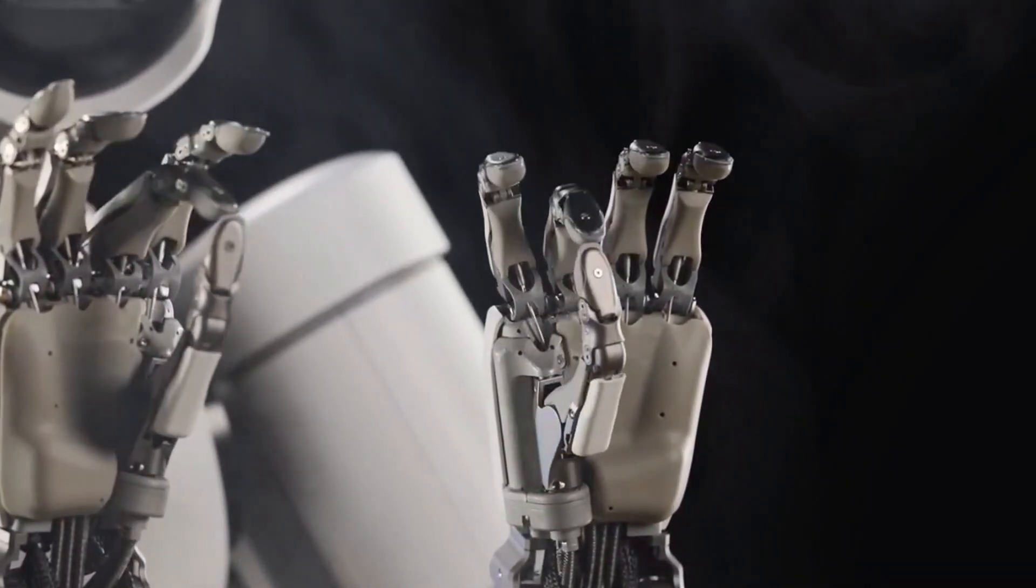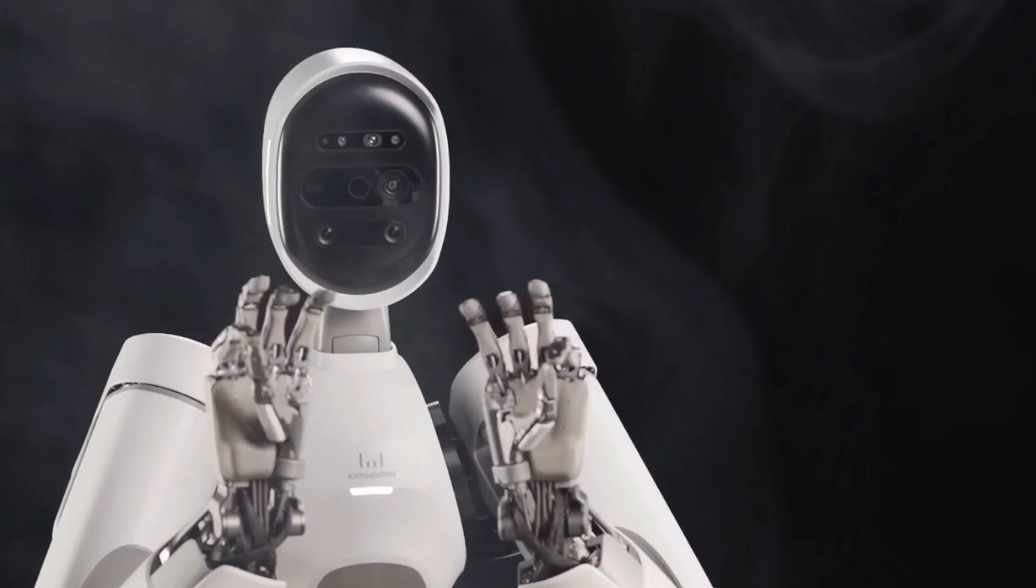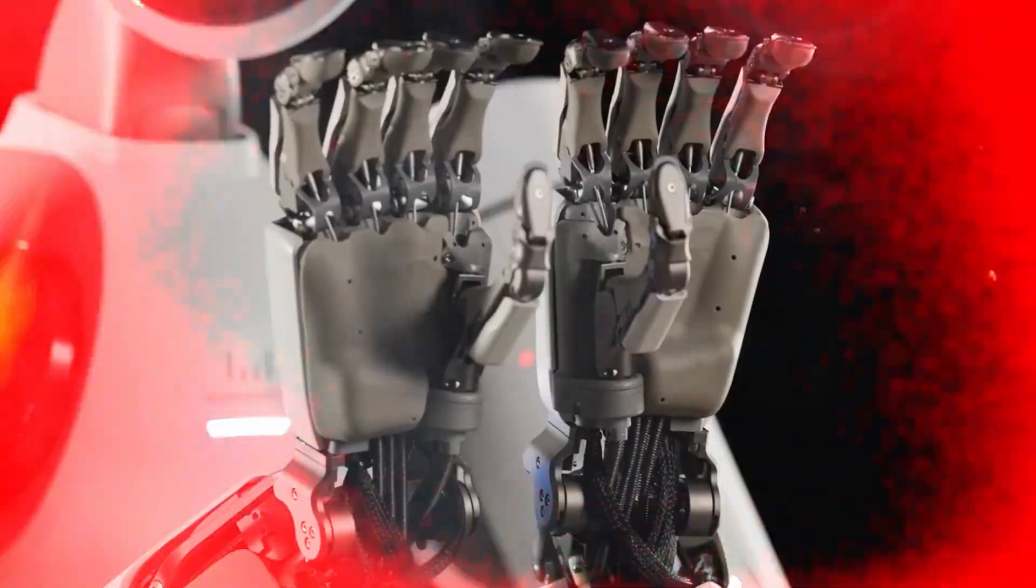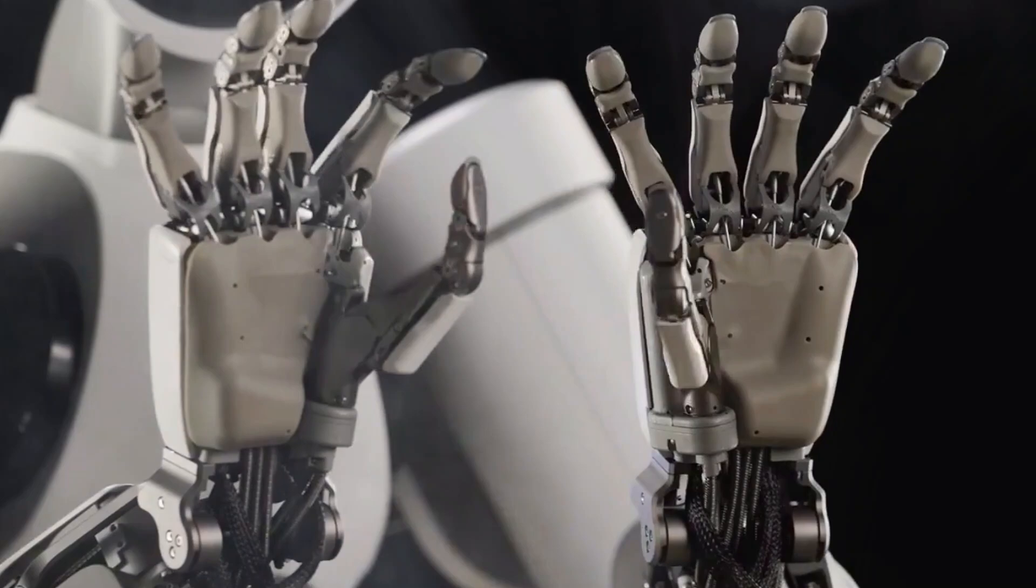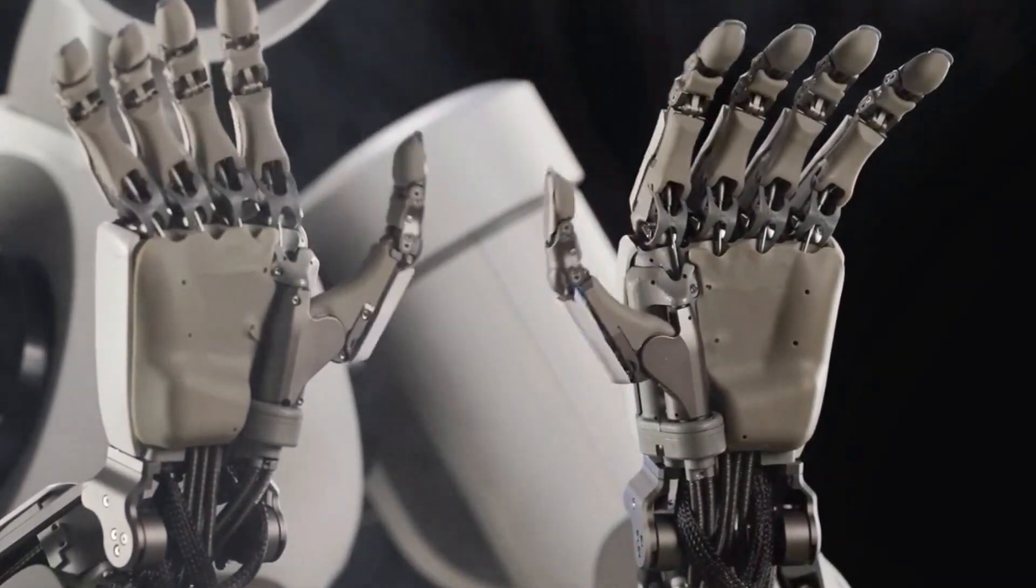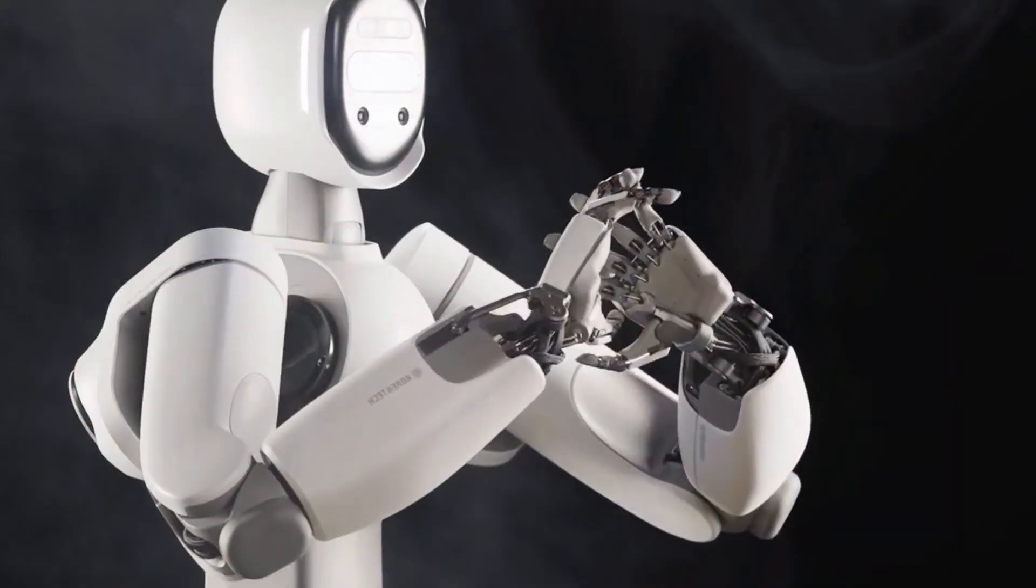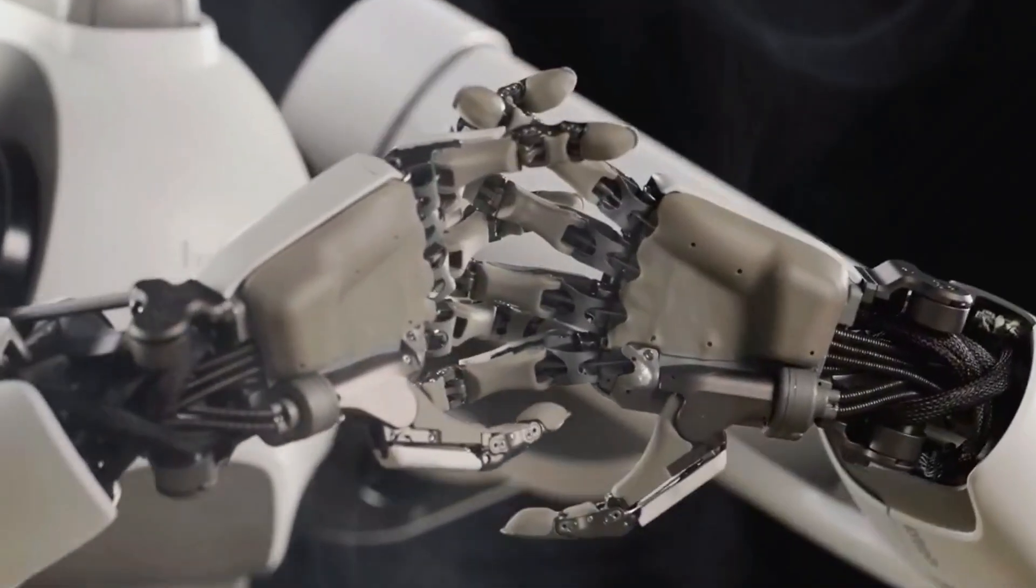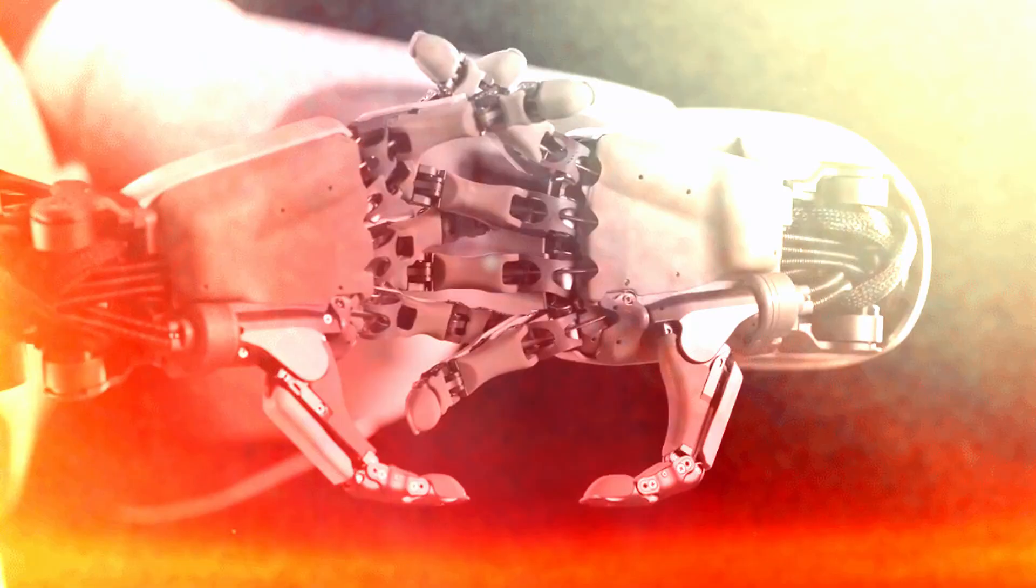Here's the big question though, if Alex can already sprint, spin and gently hand you a glass of water, what happens five years from now? Are we looking at the first robot roommate, or the start of a global race where machines not only match human agility, but redefine it?